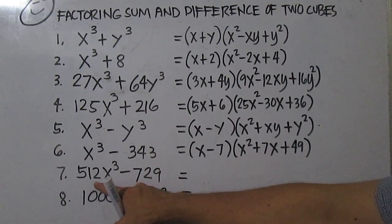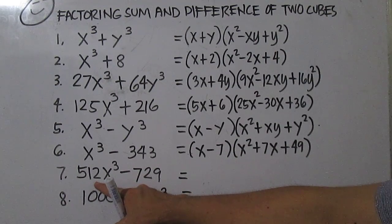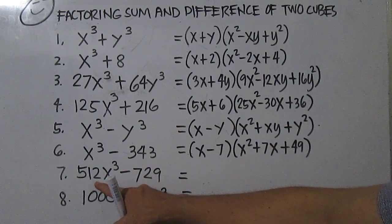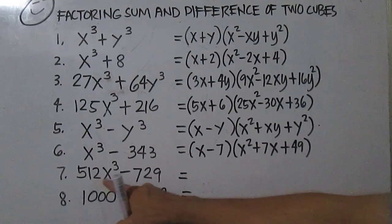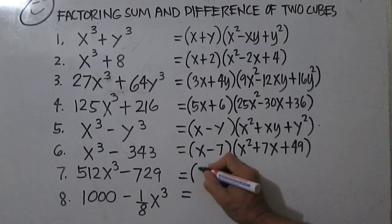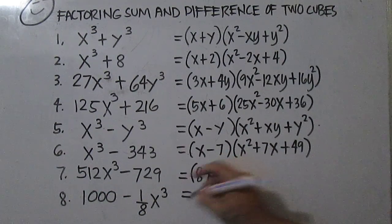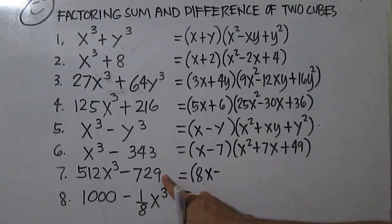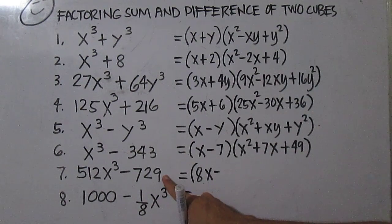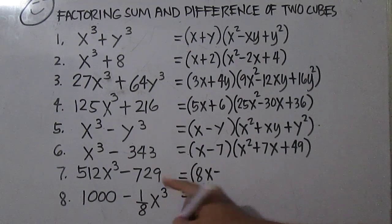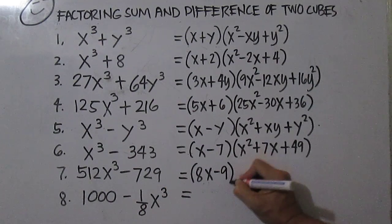5112 is just equal to 8 cubed, so the cube root of 5112x cubed is 8x. Minus — 729 is 9 cubed, so the cube root of 729 is 9.